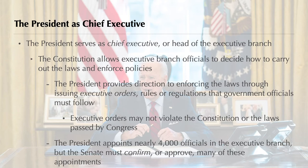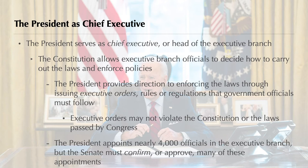The president serves as chief executive, or head of the executive branch. The Constitution states that the president must take care that the laws be faithfully executed. To execute laws means to make sure that they are carried out. Although Congress makes the laws, it is up to the executive branch officials to decide just how to carry out laws and other policies. As leader of the executive branch, the president usually makes only the broadest decisions, leaving the details to other officials. One way in which the president gives direction is through executive orders, which are rules or regulations that government officials must follow. In 1948, for example, President Harry Truman gave an executive order to end segregation in the armed forces. After that, people of all races served together instead of in separate units.